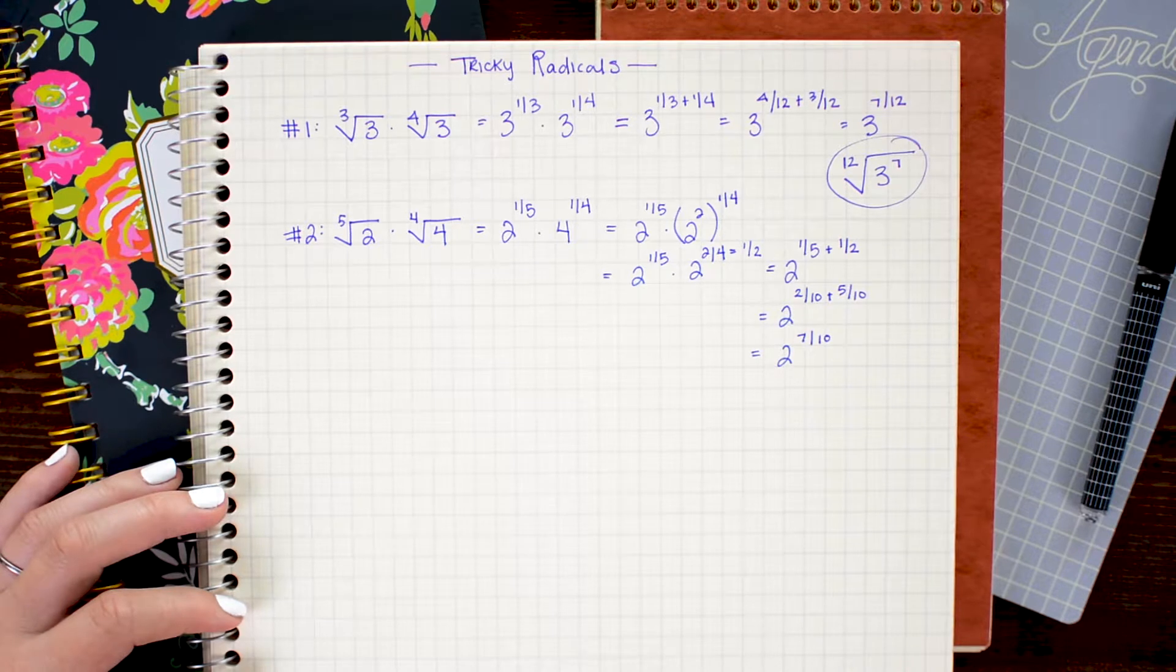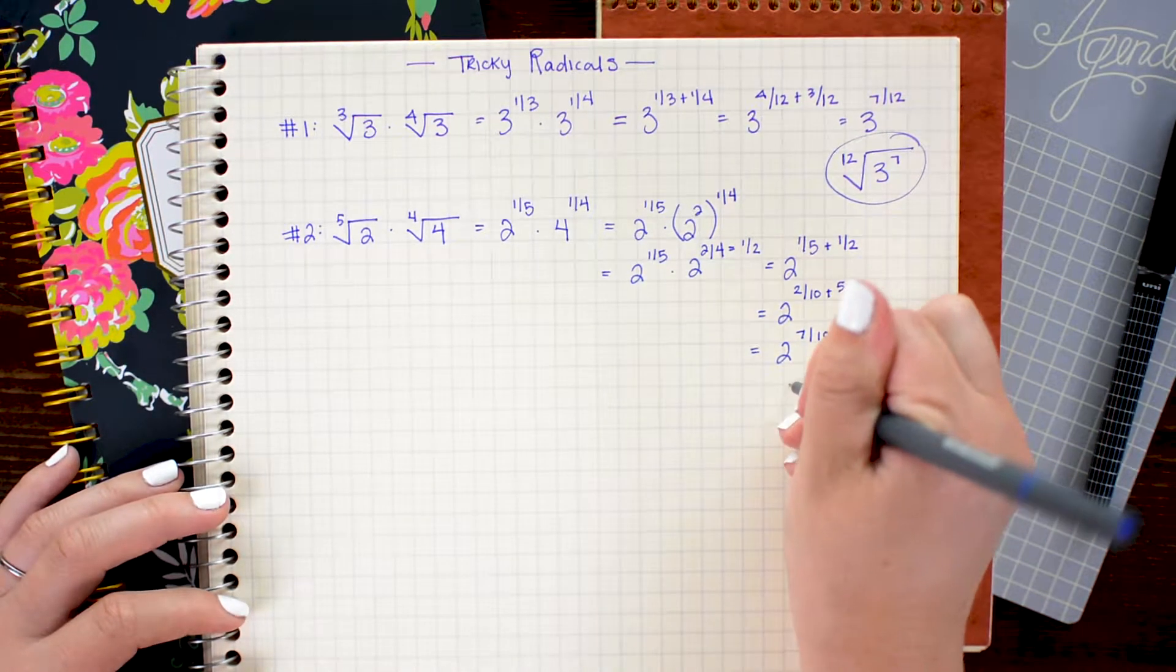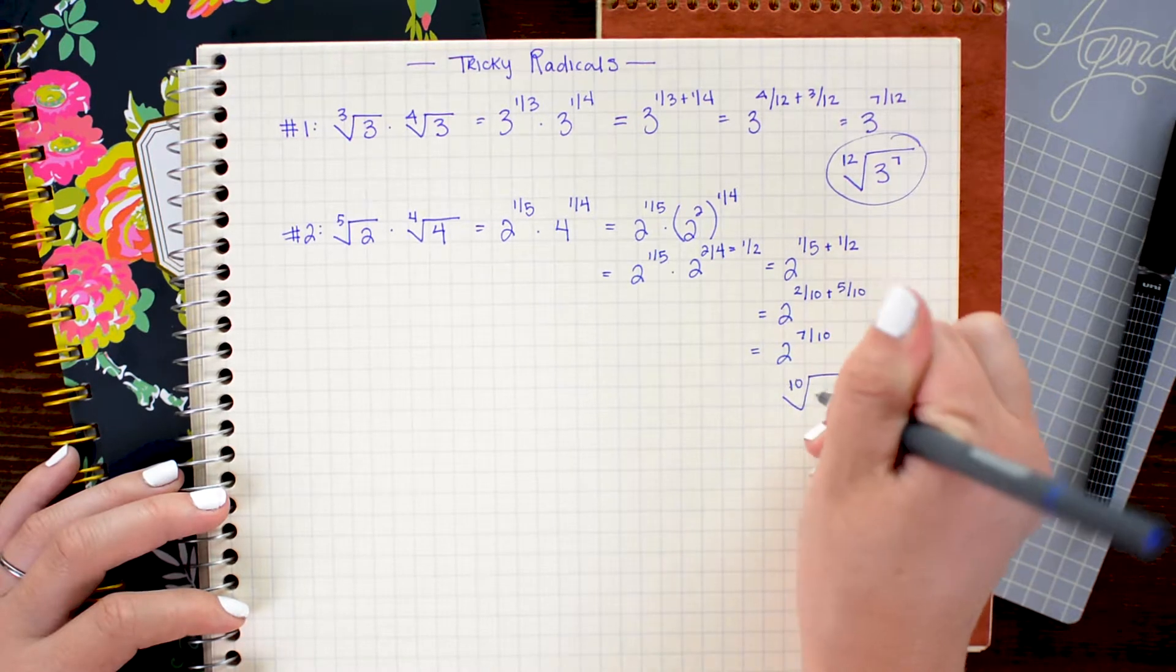There we go and just to clean it up a bit I'm going to write it back in radical notation, which will be the 10th root of 2 to the 7th.